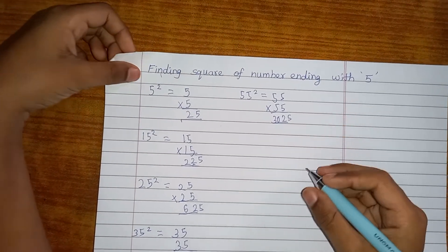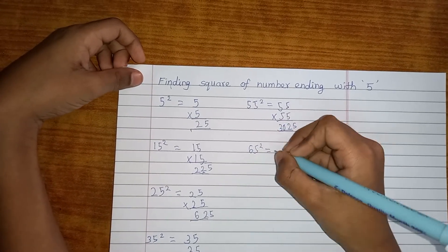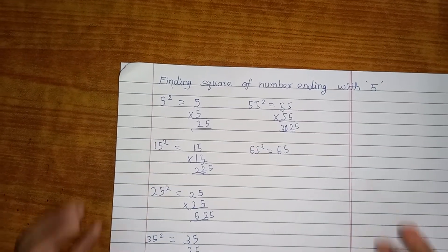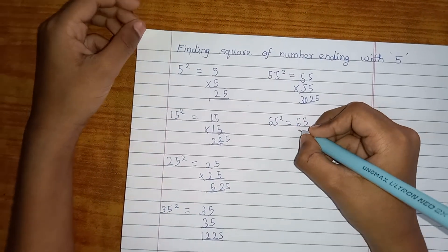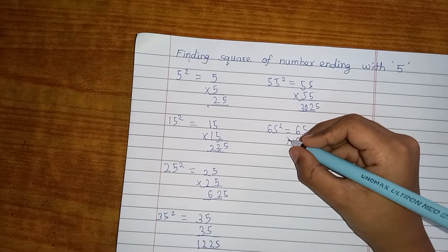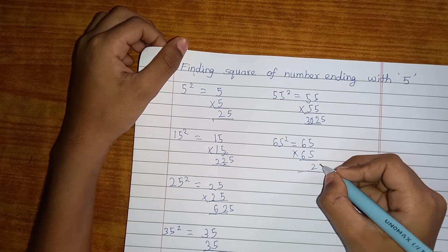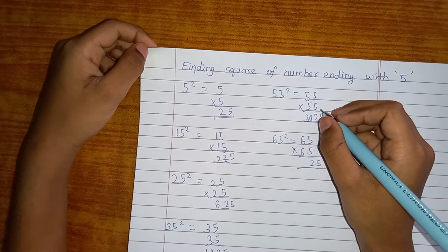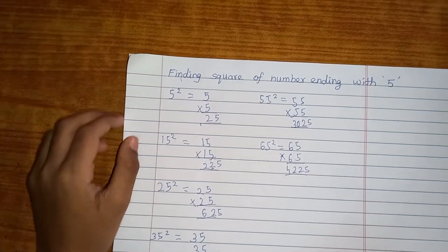Next one is 65 square. Oh, you may wonder. Should we even... If someone asks you in the road, what is 65 square, and you'll think. But you can do this trick and answer quickly. 6 after 7. And 6 7s are 42. So, answer is 4225.